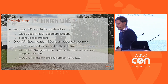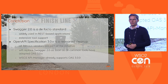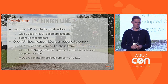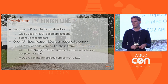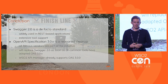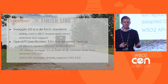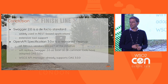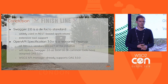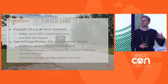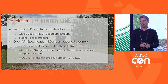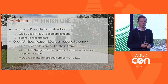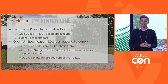In conclusion: Swagger is a de facto standard. It's been part of WSO2 API Manager for years and is widely used in REST-based applications. There's RAML and other alternatives, but most people use Swagger. There's extensive tool support. OpenAPI version 3 is the recent cleanup of the spec — all major vendors are part of the initiative, and it will replace Swagger 2.0. So when you start developing now, I suggest going with OpenAPI version 3, and as I showed you, 3.0.0 is already supported in WSO2 API Manager.